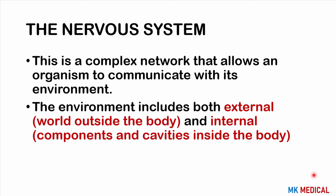Remember that the nervous system is a complex network that allows organisms to communicate with the environment. Just like a cell phone network company allows you to call an individual miles away, the cells in the body also communicate with each other via the nervous system. This environment can be external — meaning the world outside us, where we see, hear, taste, and smell things — as well as the internal environment, which is the components and cavities present inside the body.